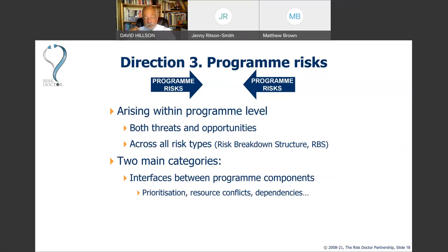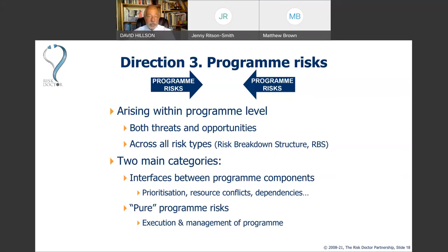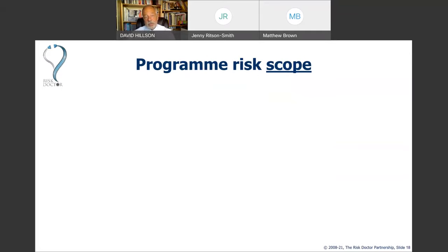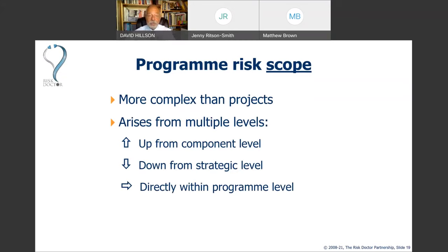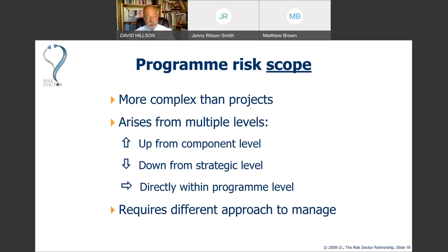There are also what we might call pure programme risks — to do with our management of the programme and how we execute the programme components as a complete programme. We've seen there are three different directions where risk arises at programme level: from below, from above, and at the programme level itself. Because this is more complex than what we find in projects, we need a different approach to manage the risks that could affect us at programme level — we can't just take project risk management and do it at a higher level.